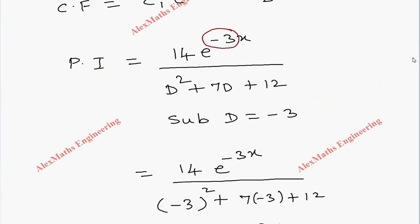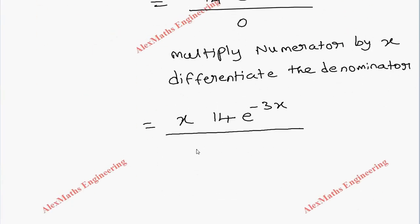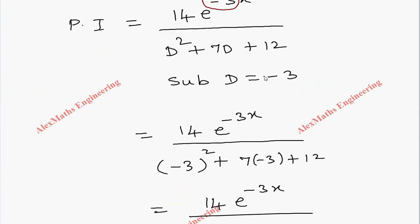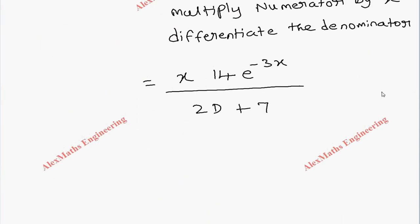Once again, we substitute D = -3. Substituting D = -3, the numerator is 14xe^(-3x).